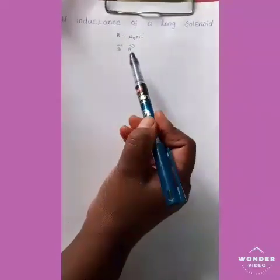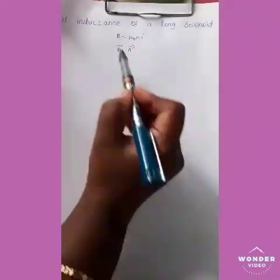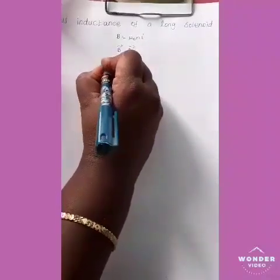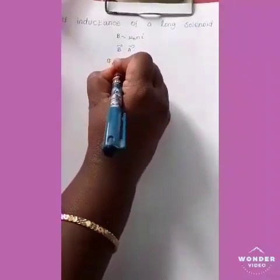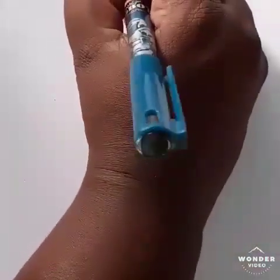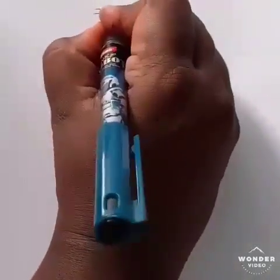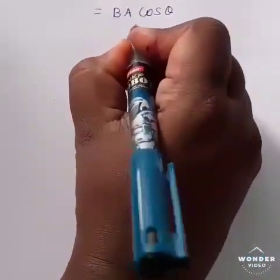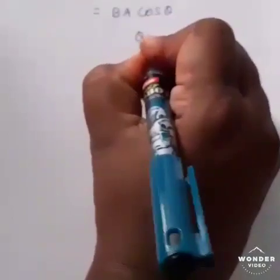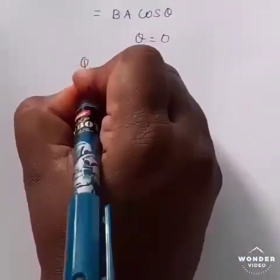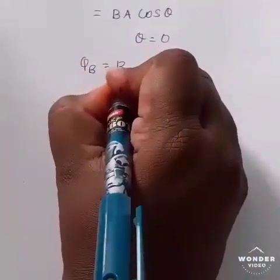The magnetic field produces magnetic flux in each turn. The magnetic flux passing through each turn is Φ_B = ∫ B⃗ · dA⃗. Integrating this equation gives B·A·cosθ. Since the magnetic field and area are in the same direction, θ = 0, so cos0 = 1. Therefore, the magnetic flux Φ_B = B·A.